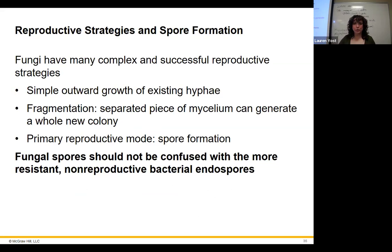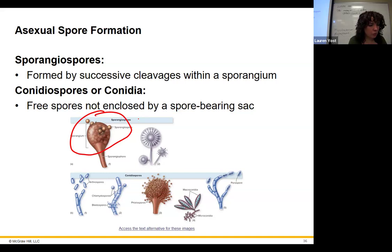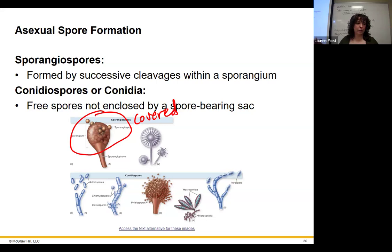Fungal spores are not like bacterial endospores — they're not resistant structures; they're just for reproductive purposes. For asexual reproduction, we have sporangiospores and conidiospores. Sporangiospores come from the sporangium — they're covered. Conidiospores are exposed, not covered — the organism is just constantly producing spores without any cover over them.